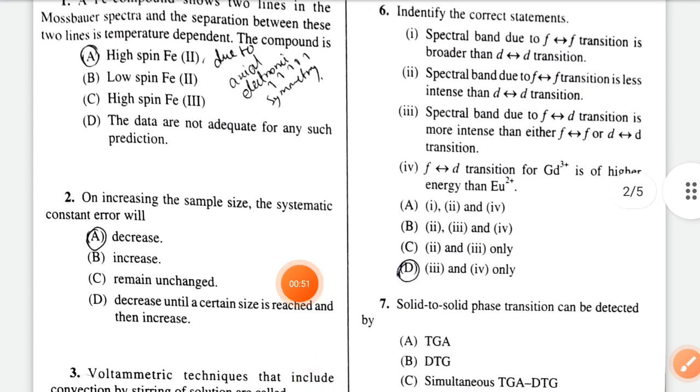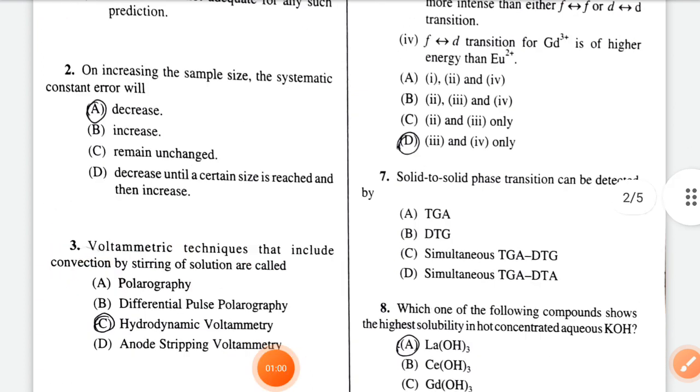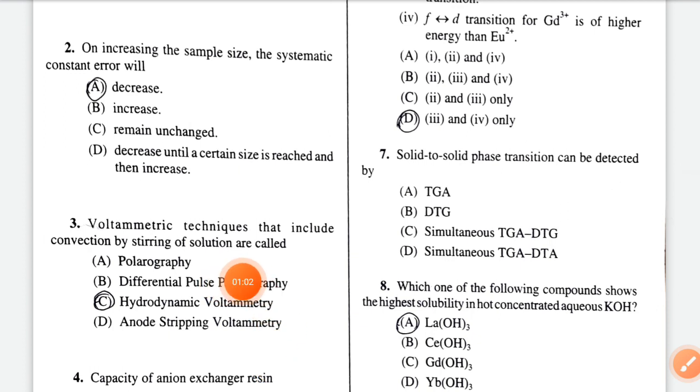Next, on increasing the sample size, the systematic constant error will decrease. Next, voltammetric technique that includes convection by stirring of solution is called hydrodynamic voltammetry, option C.